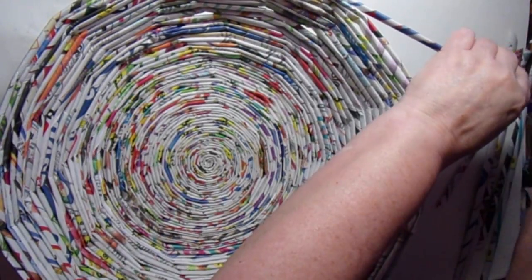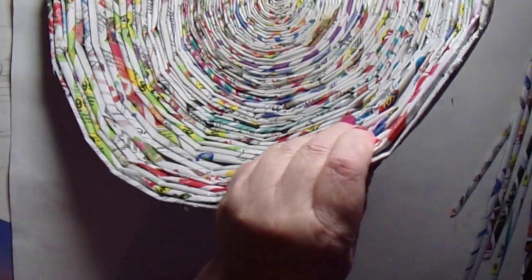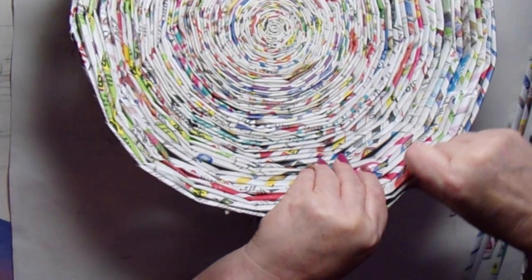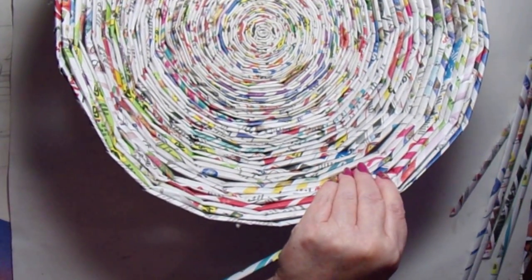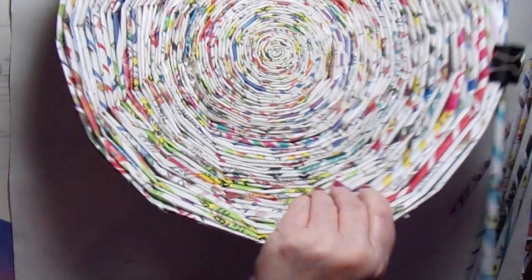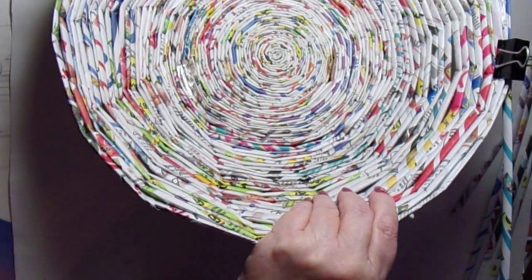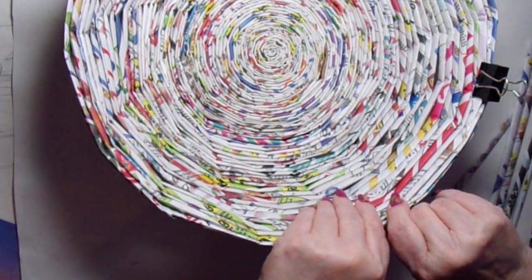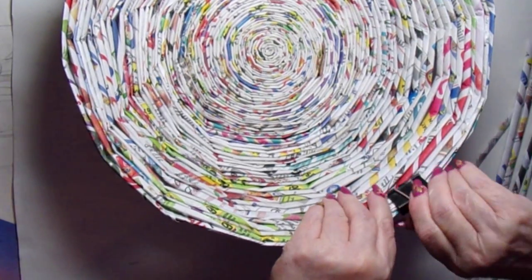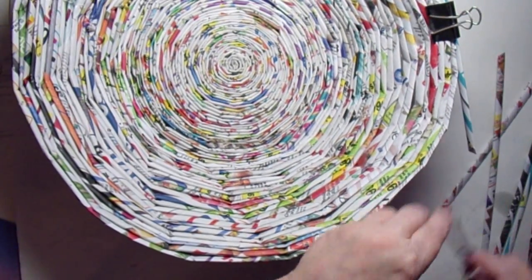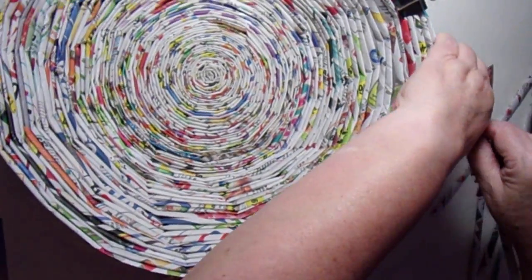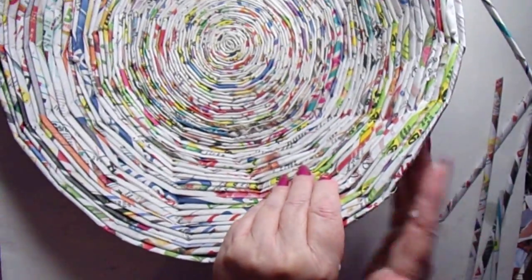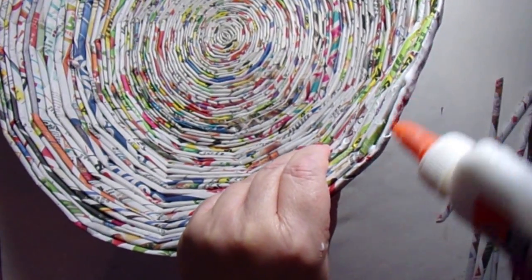And then when you've got the bottom the size that you want, you start pulling up as you go around so that it makes a bowl like curve. That's where these big paper clips come in handy. It takes a lot to hold those papers in and sometimes you need the extra help.